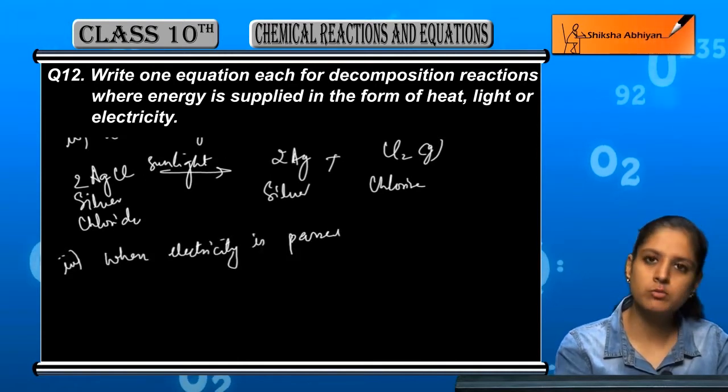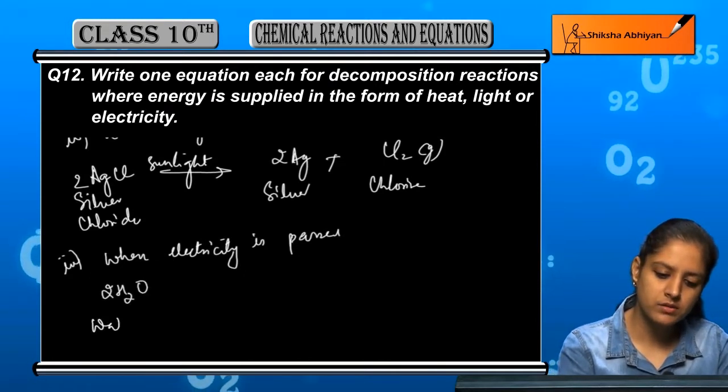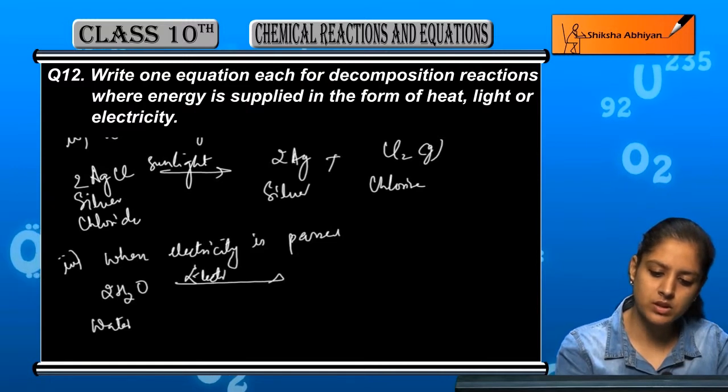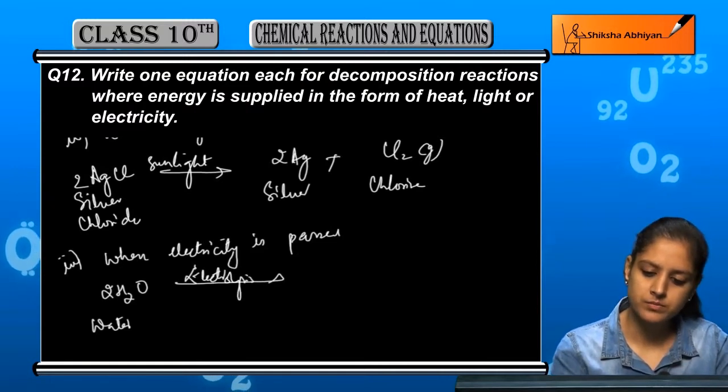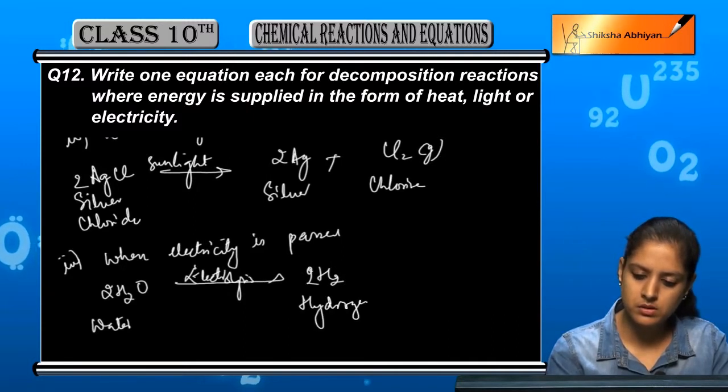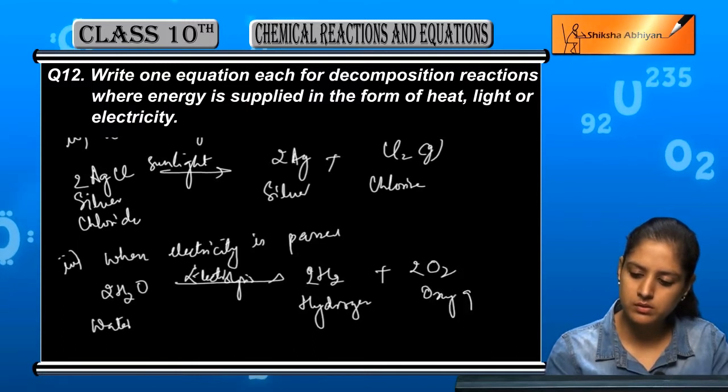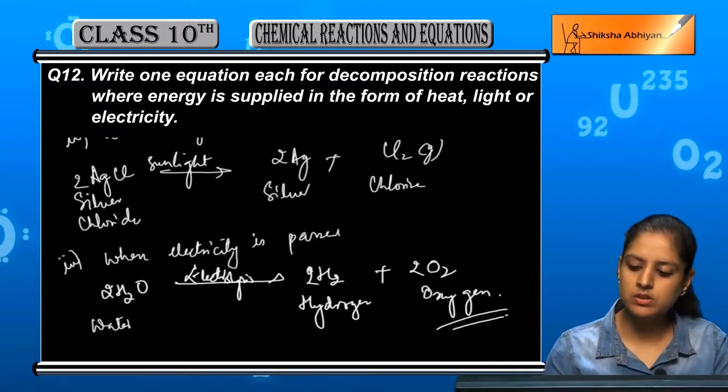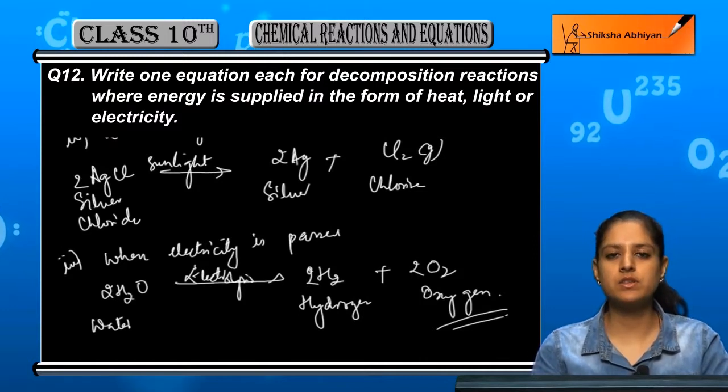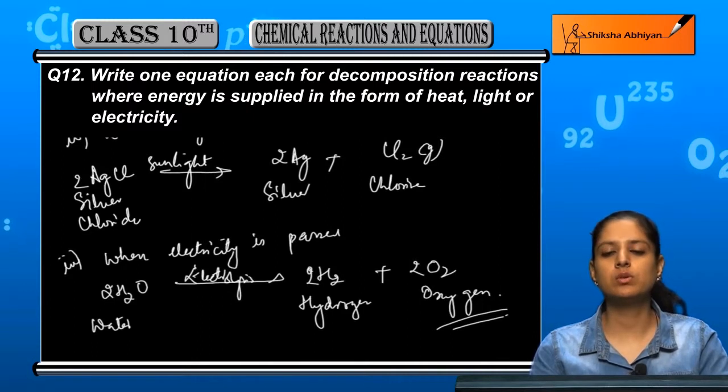So we have seen the water example. This is water, and by electrolysis hydrogen and oxygen will converge. These are the three examples of heat, light, and electricity being given to the reactant to decompose into their simpler substances.